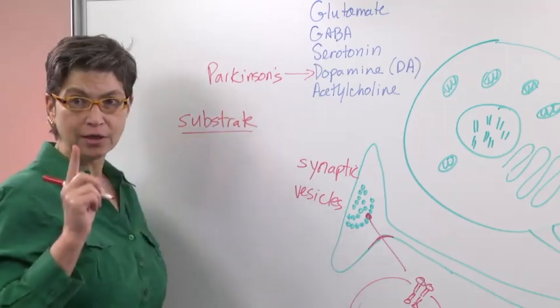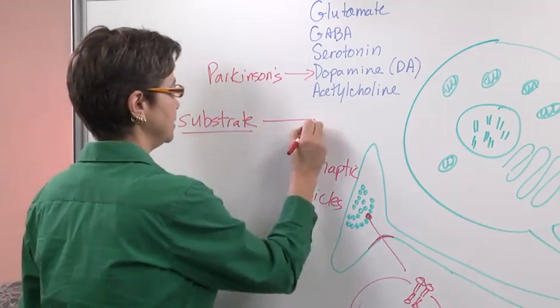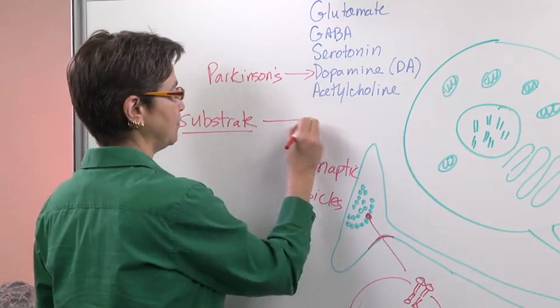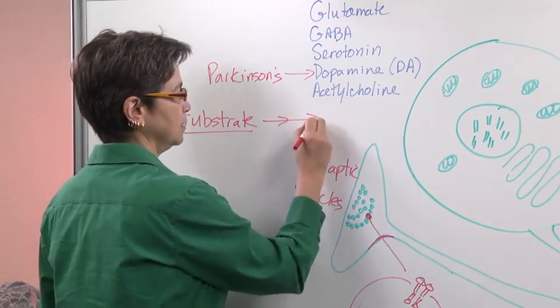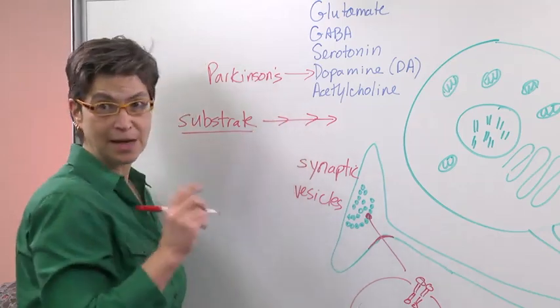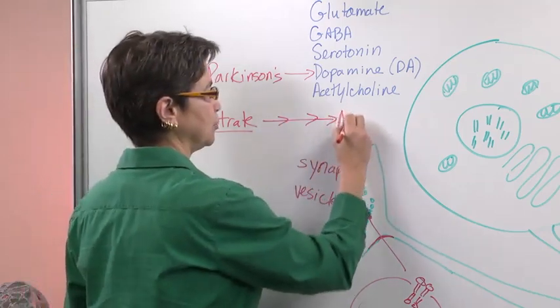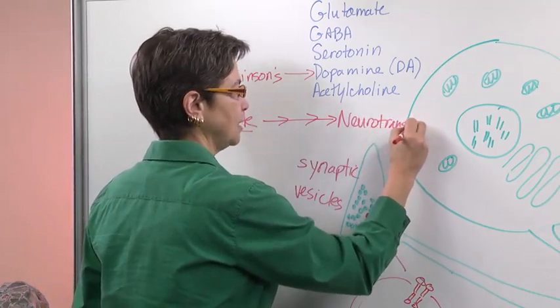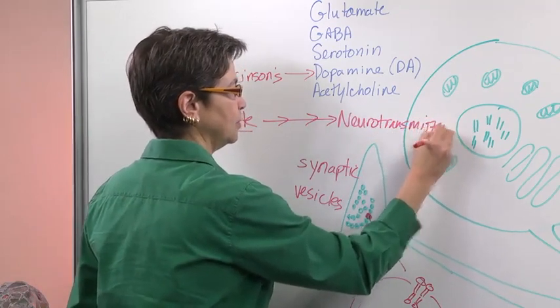Well, it turns out that there's something called mass effect, which means that you take the starting chemical—the substrate, what we call the substrate—and then through a series of enzymatic reactions, we end up with a neurotransmitter. In the case of dopamine...